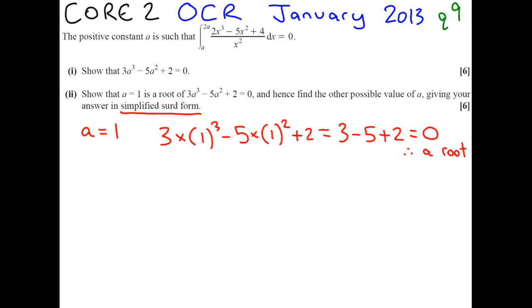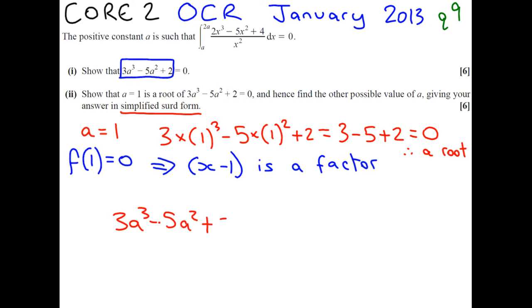So, the rest of this question says, hence, find the other possible values of A, giving your answer in simplified form. Now, what we've just done is if f of A is this function, we've found f of 1, and it gave us 0. So, by the factor theorem, A minus 1 is a factor. So, what we can do is we can divide our cubic expression by A minus 1 and see what we get.